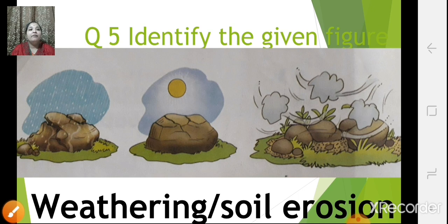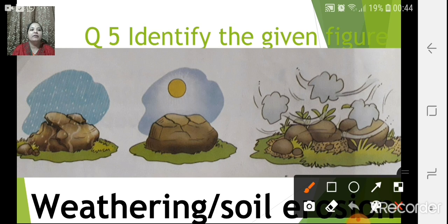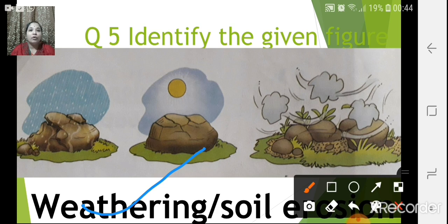Identify the given figure. Children, can you tell me — is it weathering or soil erosion? It is weathering. Weathering means breaking down of rocks into smaller pieces. Because of rain, sun, and changes in weather, the bigger rocks are broken down into smaller pieces. So this figure shows weathering.